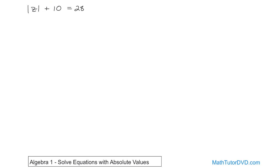But you have this plus 10 here. So we're going to do the same thing we always do. We'll subtract 10 from both sides. So we'll have the plus 10 minus 10 and then we'll have the 28 minus 10.